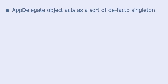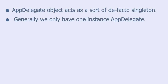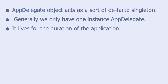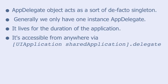The AppDelegate object acts as a sort of defacto singleton. Generally, we have only one instance of the AppDelegate. It lives for the duration of the application and is accessible from anywhere via UIApplication.sharedApplication.delegate. This fact that all objects can access AppDelegate makes it very popular for sharing global data. For instance, if two objects that don't have a pointer to each other need to share data, one object can write data to the AppDelegate and the other can read the same data from it.